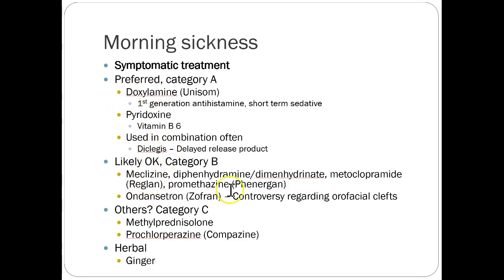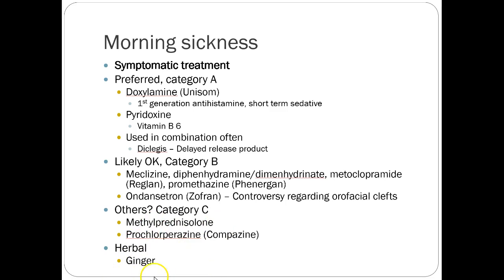Category B options considered likely okay include meclizine, diphenhydramine (Benadryl), metoclopramide (Reglan), and promethazine. Ondansetron or Zofran used to be first line for pregnancy and a lot of people still use it, but there was a large meta-analysis showing a possibly slightly higher risk of oral-facial clefts, though conflicting evidence exists. Right now we use other things first — start with doxylamine-pyridoxine, then move to second-line options, with Zofran slotted in there. Ginger actually has pretty decent data as an herbal option if the person can tolerate it.